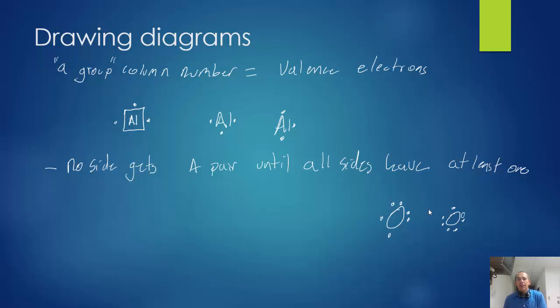So to draw an electron dot diagram, we just draw the valence electrons, which are the electrons in the highest occupied s and p orbitals on the highest occupied energy level. Remember, 8 is the magic number because the s and p's only give us 8 valence electrons.